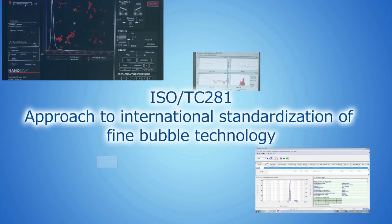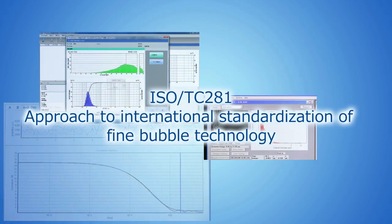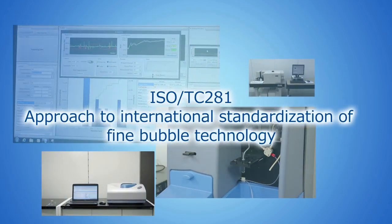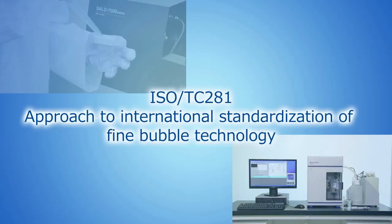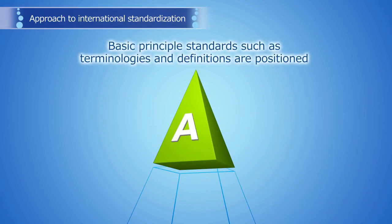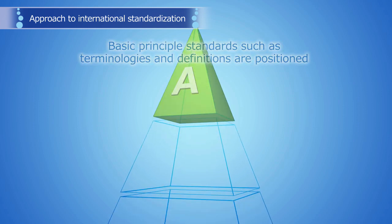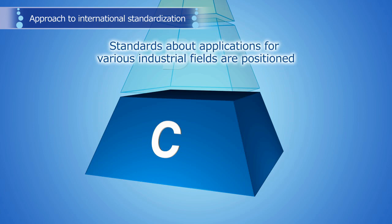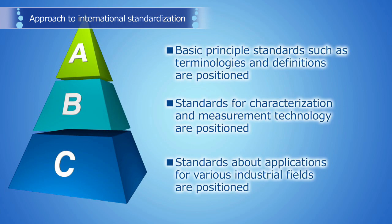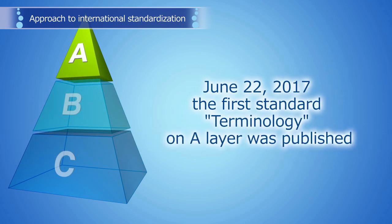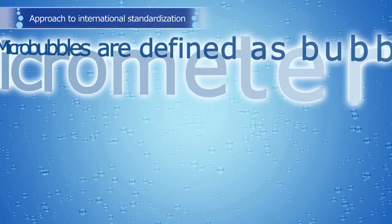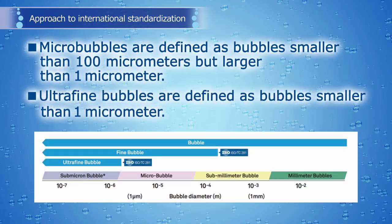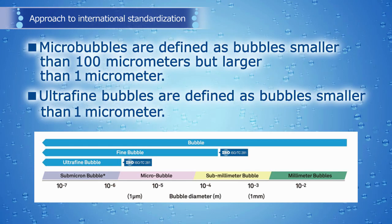FBIA has contributed to setting up the ISO TC 281 Technical Committee for the standardization of fine bubble technology, based on a proposal made by Japan. International standardization is managed according to a three-layer configuration: basic principle standards such as terminologies and definitions on the top layer A; standards for characterization and measurement technology on the middle layer B; and standards regarding applications for various industrial fields on the bottom layer C. The first international standard in ISO TC 281 was published on June 22, 2017. It dealt with terminology on the A layer, defining micro bubbles as bubbles smaller than 100 micrometers but larger than 1 micrometer, and ultra-fine bubbles as bubbles smaller than 1 micrometer.